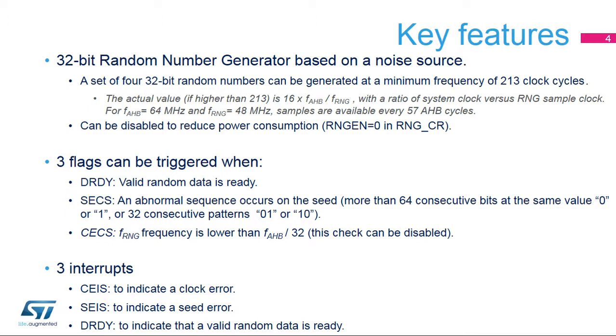The rule of thumb is: the lower the RNG clock, the better the entropy for the sampled random source.